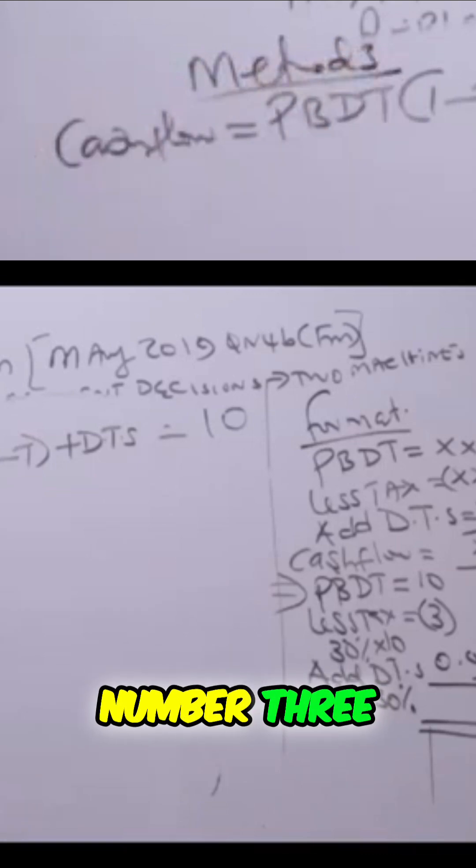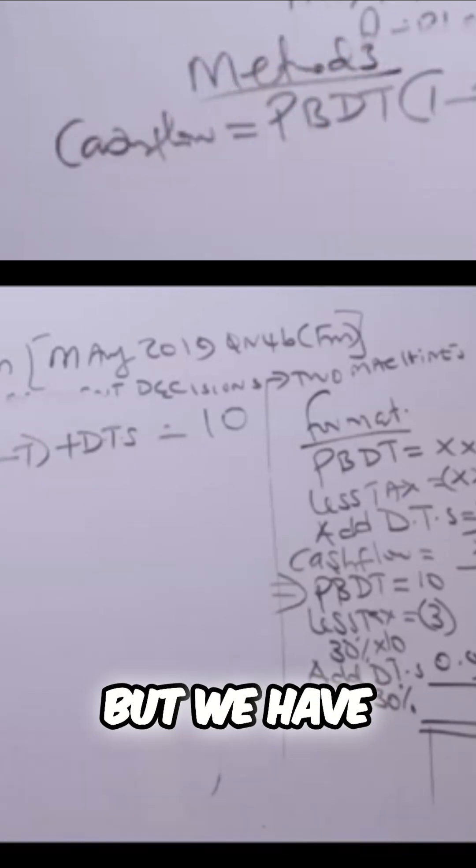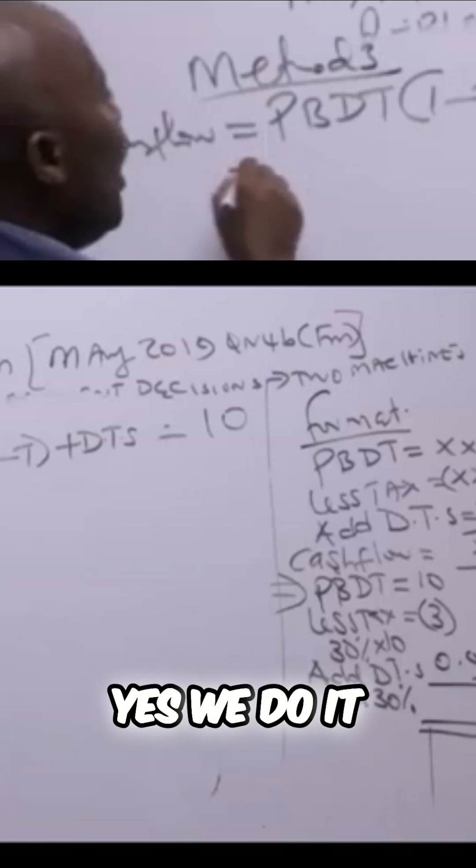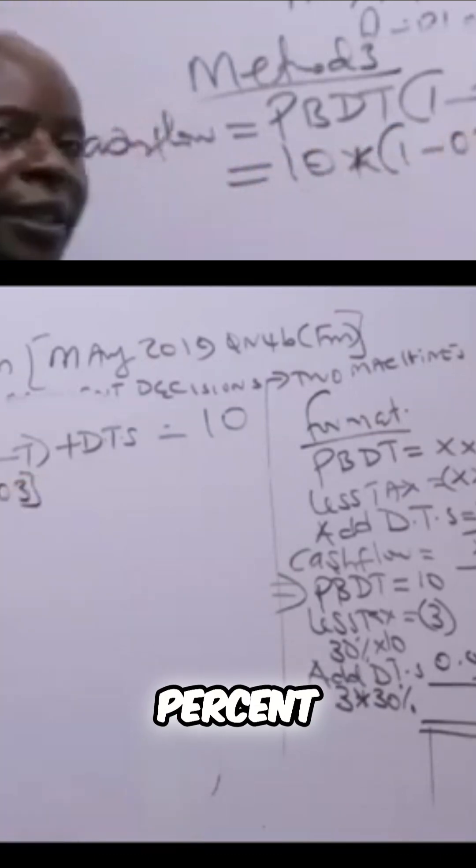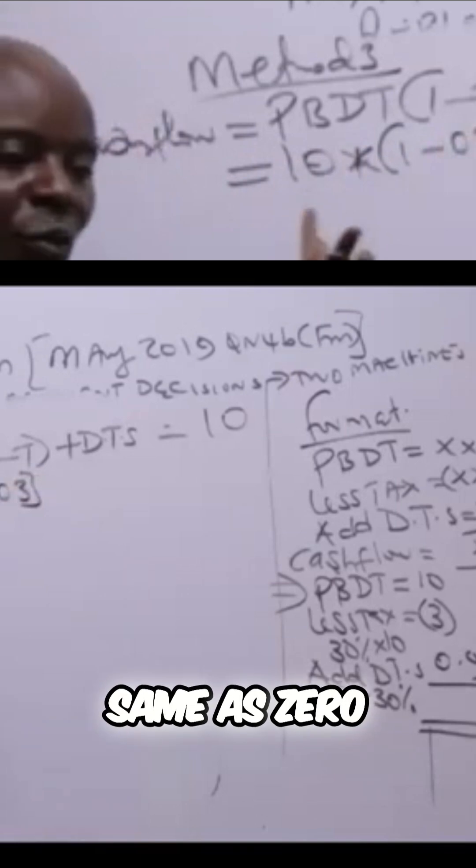This is method number three. But do we have this PBDT? Yes, we do. It is 10 times one minus rate of tax is 30%. 30% is the same as 0.3.